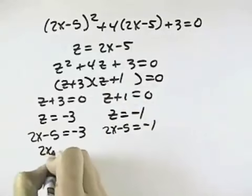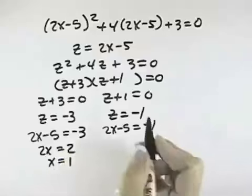Solving this, I add 5 to both sides to get 2x equals 2. Dividing by 2, I get x equals 1.